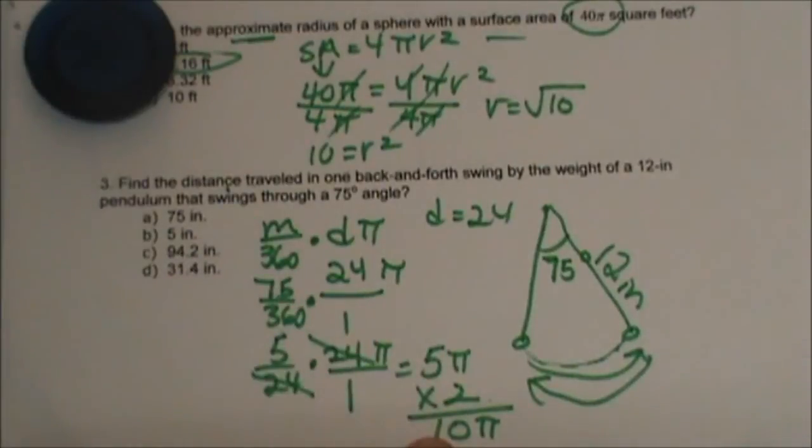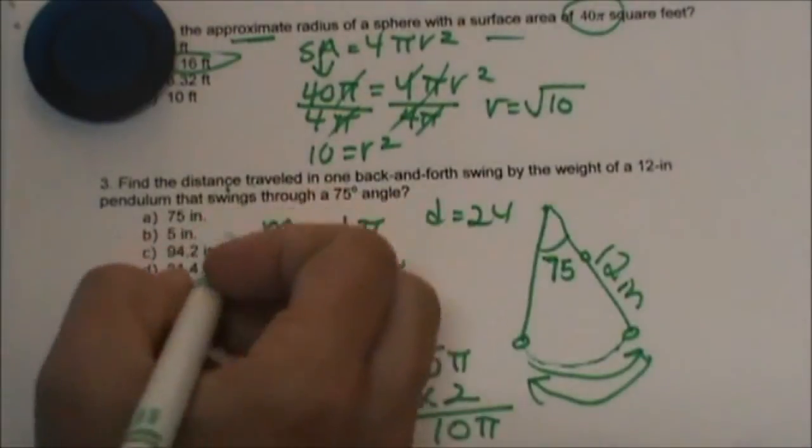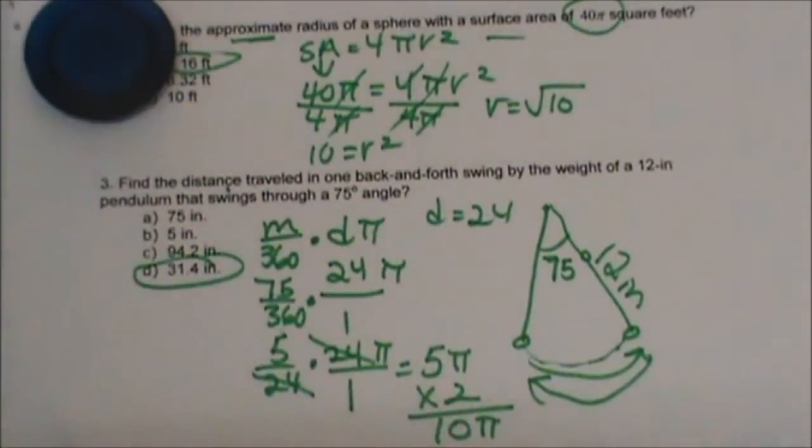Notice I don't have 10 pi there because this is not in terms of pi, so I am going to have to multiply 10 times 3.14. Well you should recognize it, what is 10 times 3.14? It is d, 31.4.